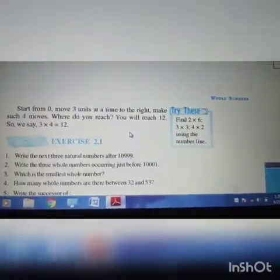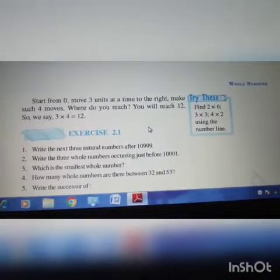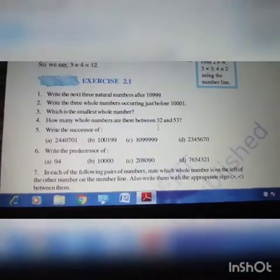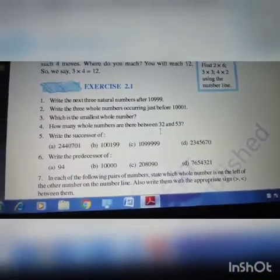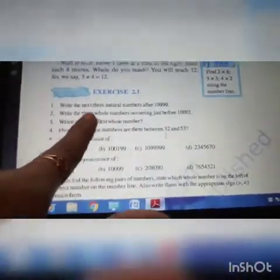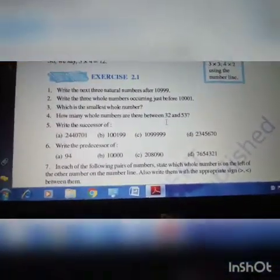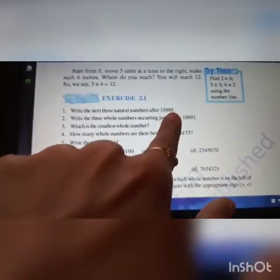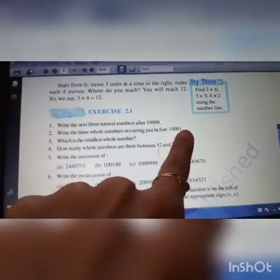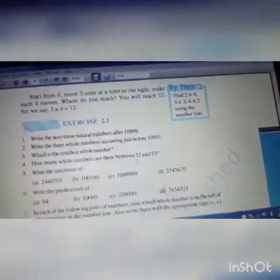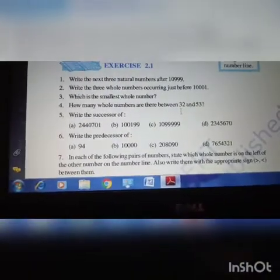Next they have given using the number line what all operations we can do. Next is your exercise 2.1. In this exercise what we are going to do? We are going to find the next 3 natural numbers. Next means what you will do? Add 1 to this number. You will get the next number. Then add 1 to that number. You will find the next number. Like that you can find the next 3 whole numbers.